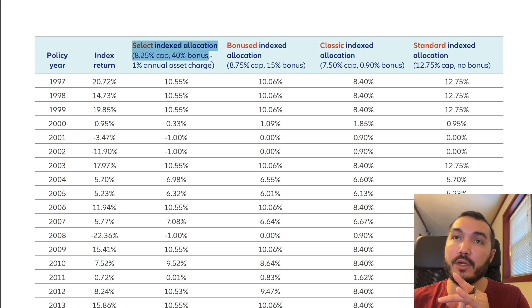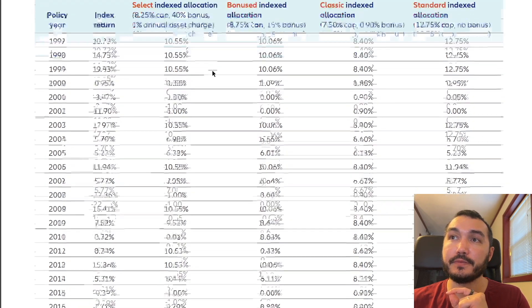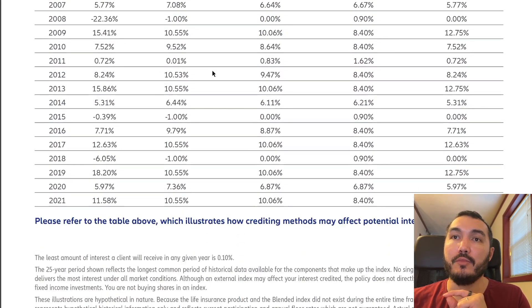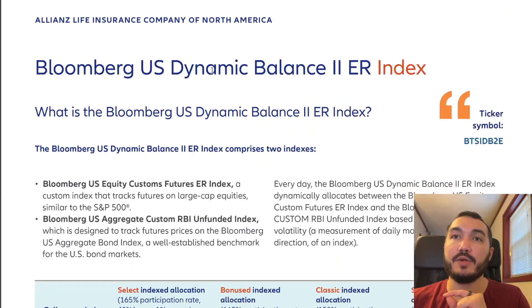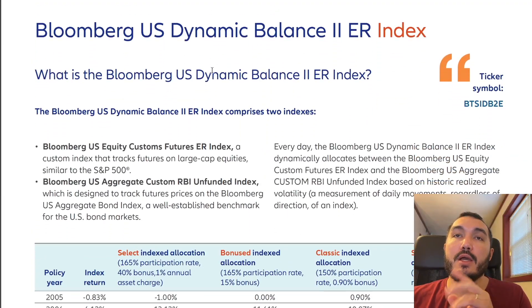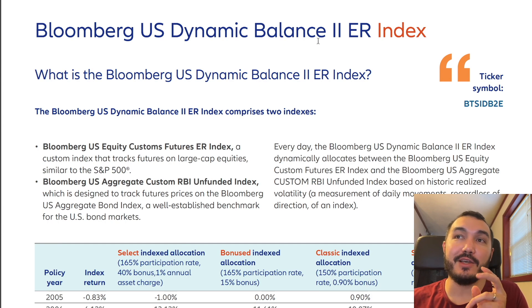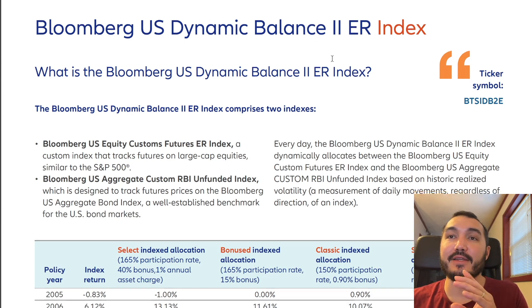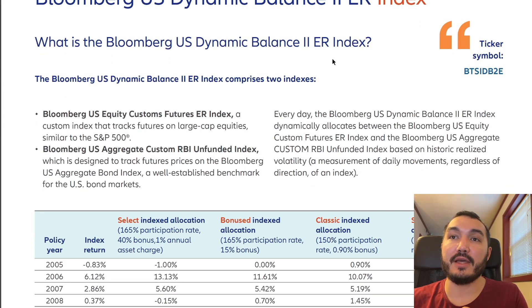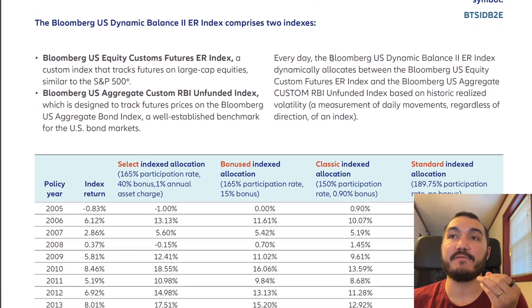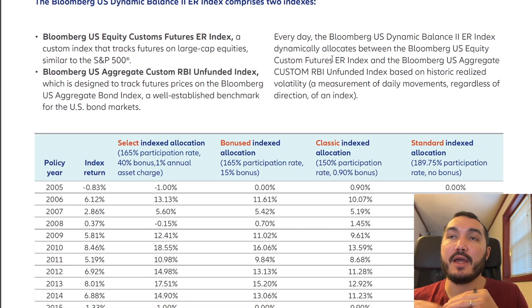The strategies that I like to use for this carrier don't have a cap. I like to use those uncapped options that are in these volatility control indexes. So let's move down to it. The Bloomberg US Dynamic Balance ER Index is one of the index strategies that I like to use because it is uncapped — it's a volatility controlled index. So why does that matter?